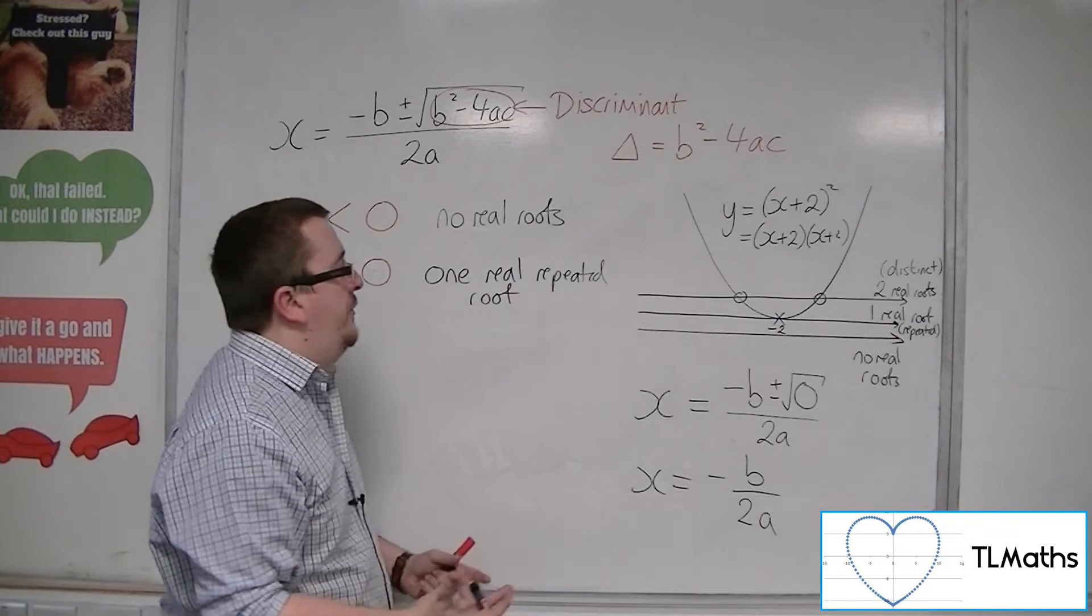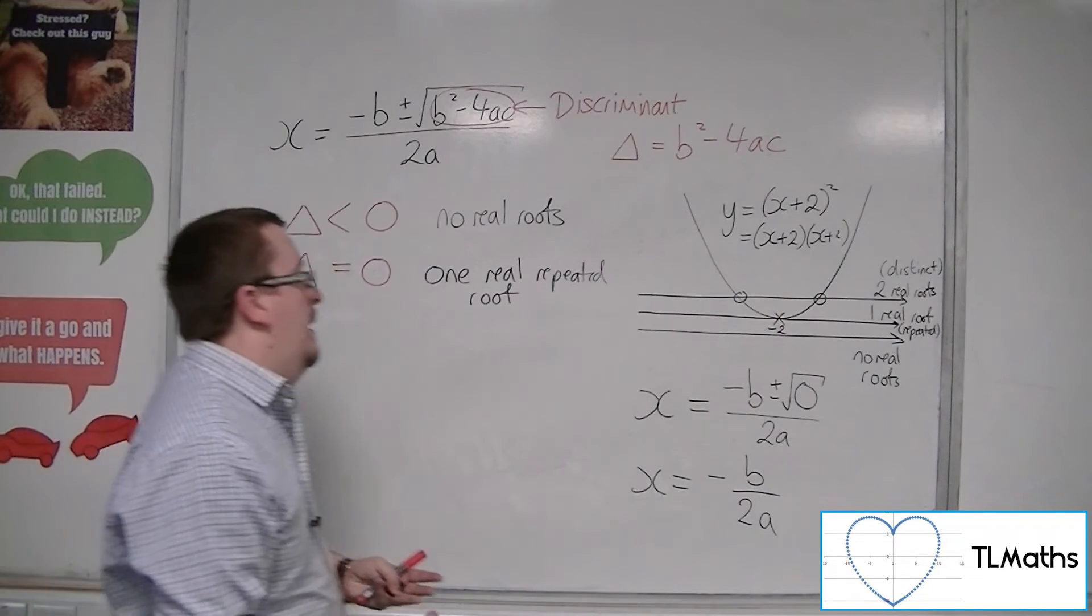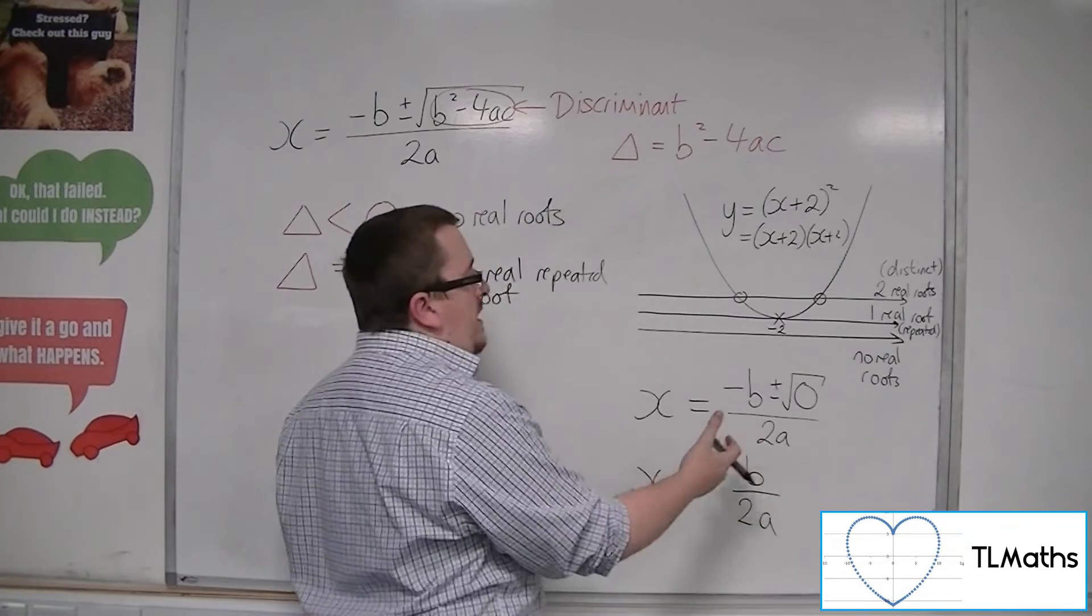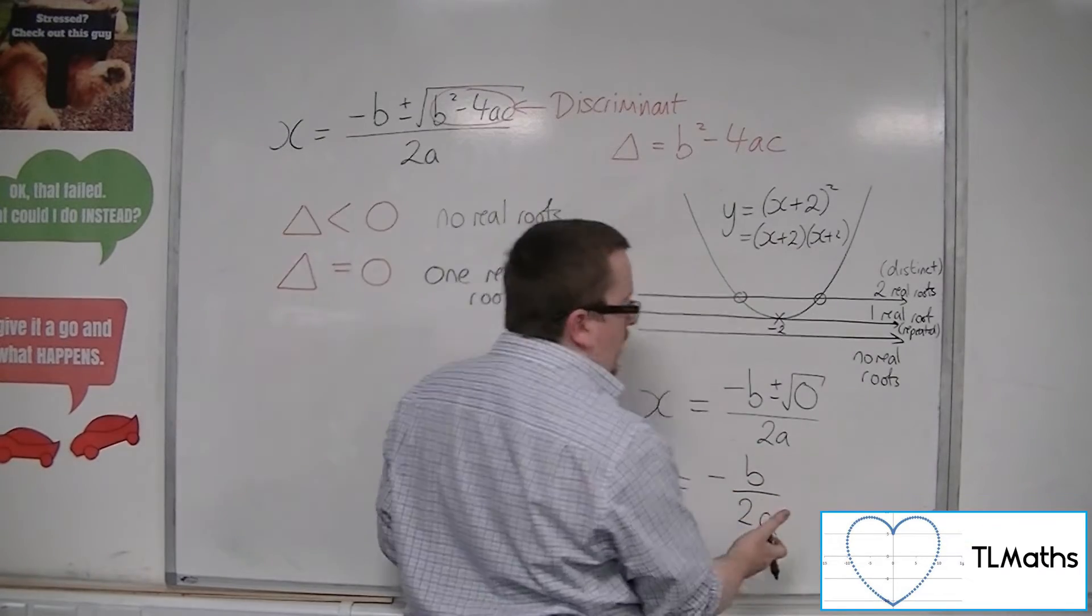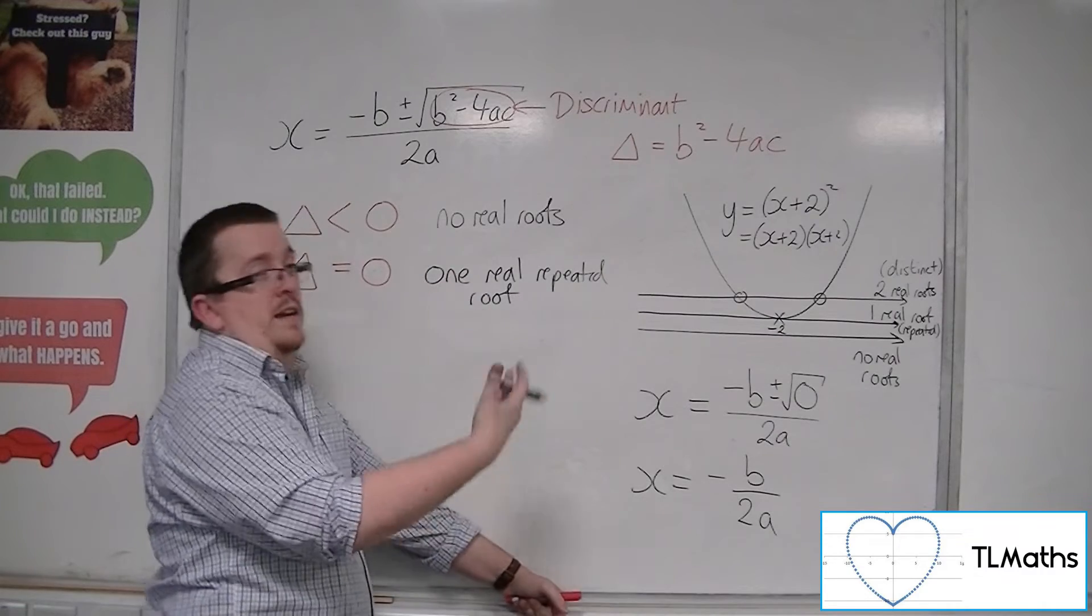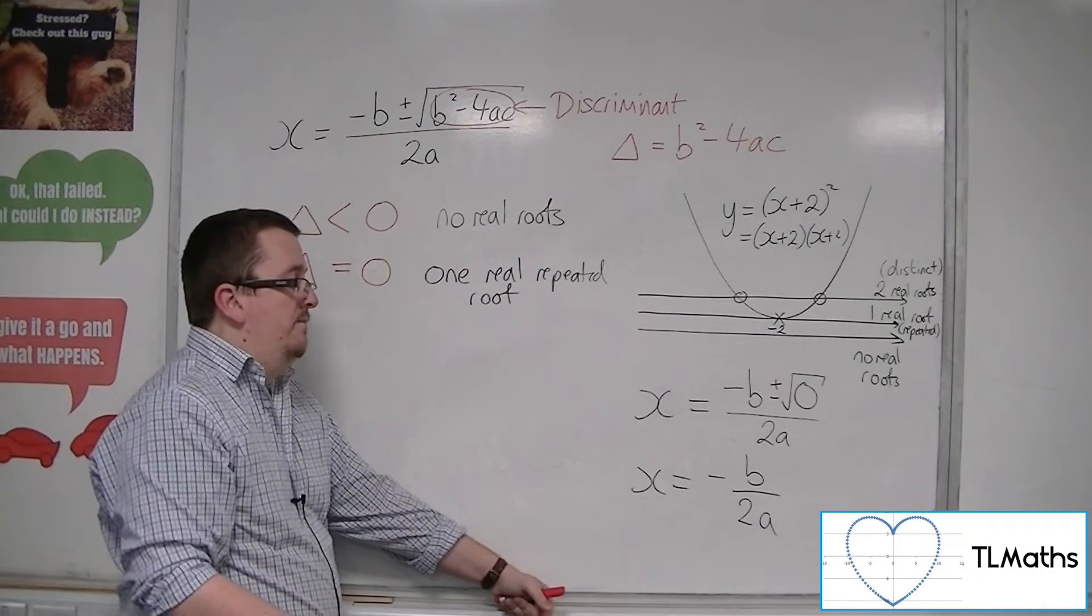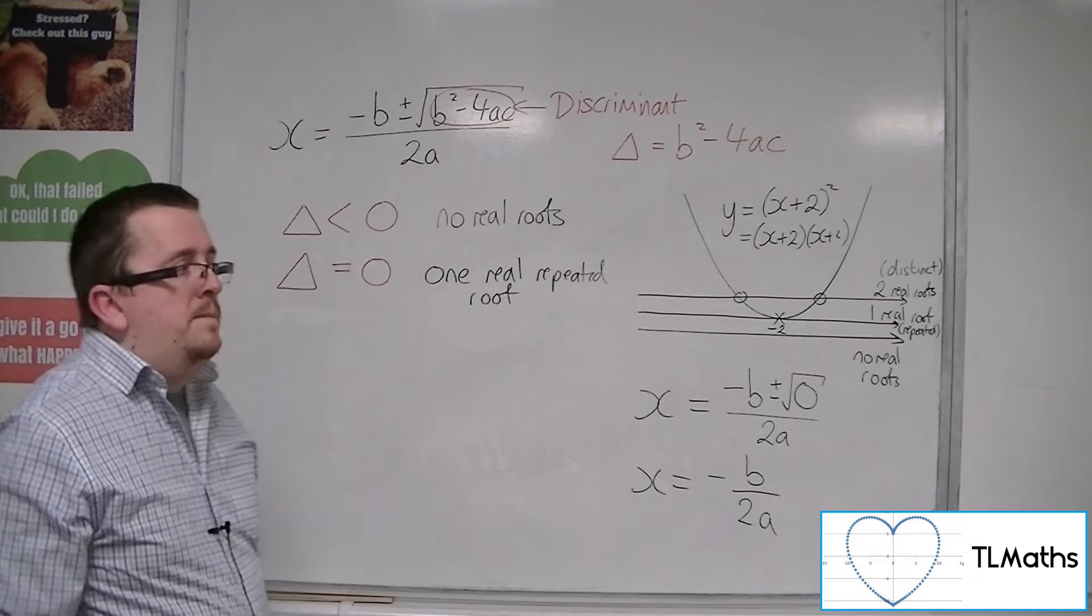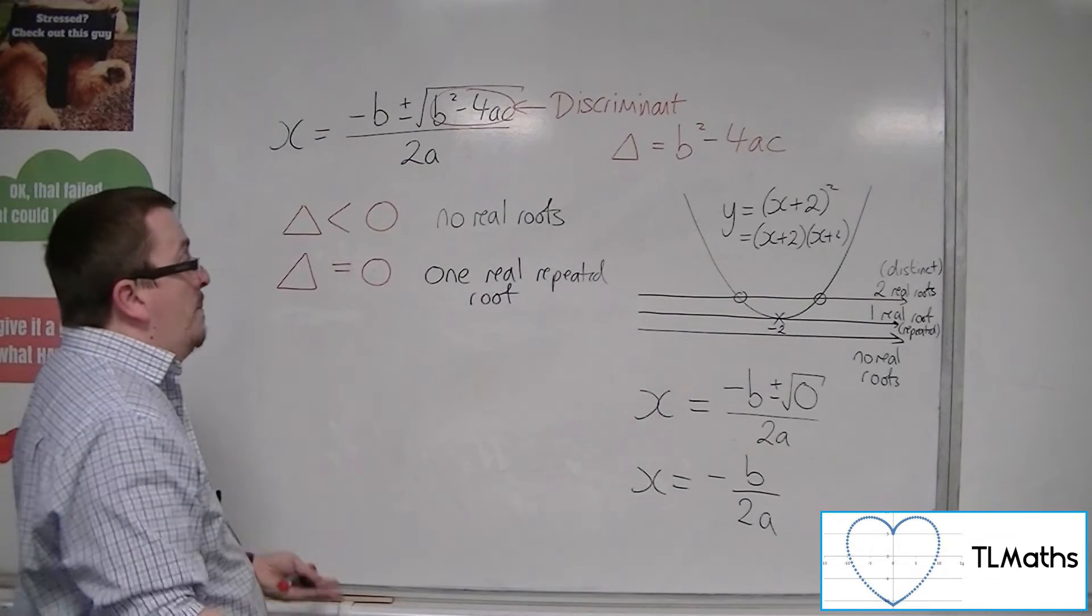So you could say that you've got x equals minus b plus 0 over 2a, or you could say minus b minus 0 over 2a, in which case they're both exactly the same, and that's why we would say that they are repeated.